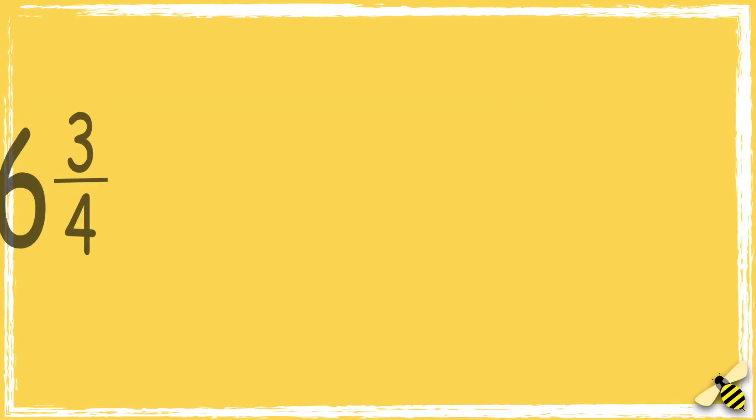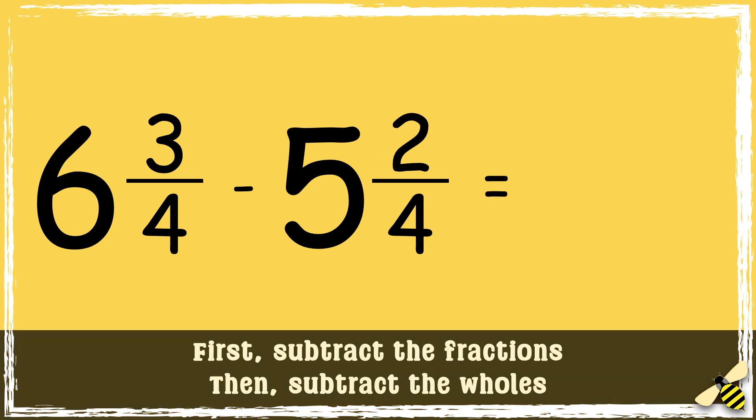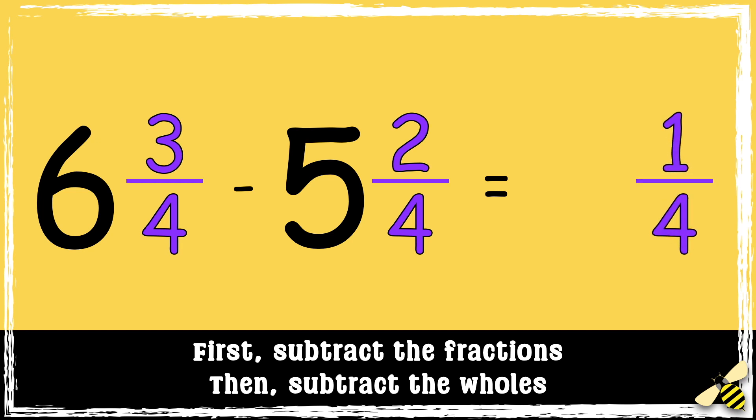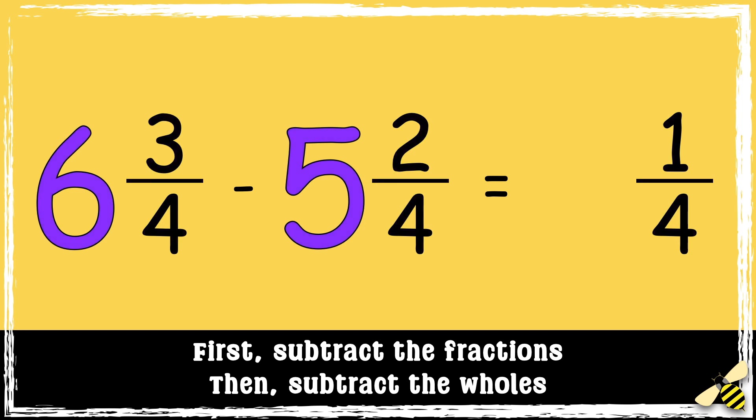Here's another one: six and three-quarters take away five and two-quarters. So first we subtract the fractions: three-quarters take away two-quarters equals one-quarter. Then we subtract the whole numbers: six take away five equals one. So the answer is one and one-quarter.